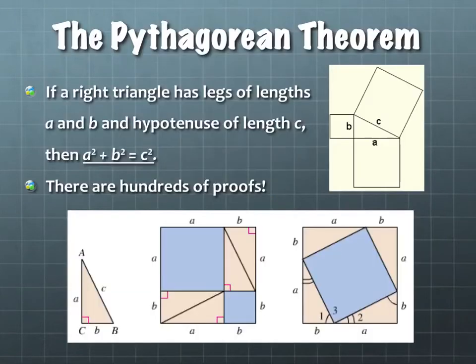The first one, the Pythagorean Theorem, is probably one that's pretty familiar to you in terms of an equation. It's finding the side lengths or the ratio for a right triangle. So if a right triangle has legs of lengths A and B and a hypotenuse of length C, then A squared plus B squared equals C squared.